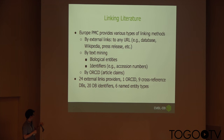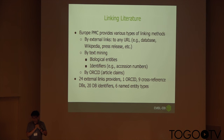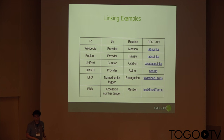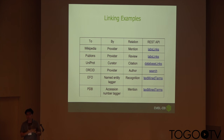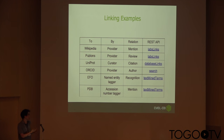As a summary, we have 24 external link providers, ORCID, nine cross-references done by curators, 20 database identifiers, and six named entity types done automatically. For example, Publon provides us a mapping table between PMC IDs and their reviews. So for a given PMC ID, if there is a link, we know this article has been reviewed by someone in Publon. This is the kind of information you get on the Europe PMC website.